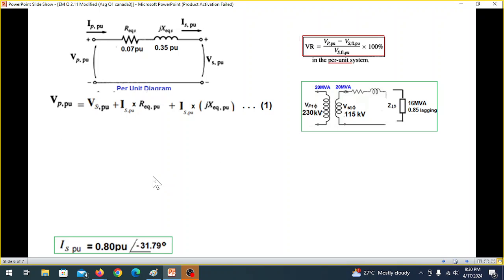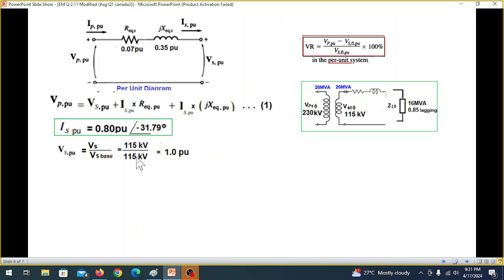So we were here, we have calculated ISPU, and we can plug in, but we don't know what is VSPU. Now, the best method is that, look here, the rated voltage is always the base voltage. So the base voltage is 115, and the actual voltage here is also 115. So 115 divided by 115, it is 1.0 PU. Also, we can use the diagram, and here we take this as 1, because we are taking as reference, and all measurements are based on this reference, therefore, we can write it as 1.0. Whichever method you like, I think this is a better method.